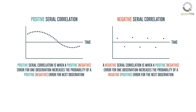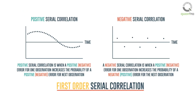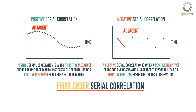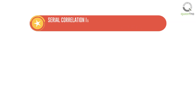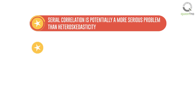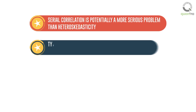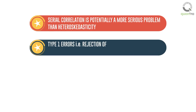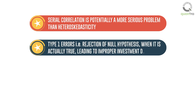In this figure, the assumption is that of a first-order serial correlation, or serial correlation between adjacent observations. Serial correlation is potentially a more serious problem than heteroscedasticity. It causes too many type 1 errors — that is, rejection of the null hypothesis when it is actually true — leading to improper investment decisions.